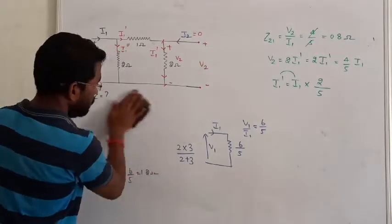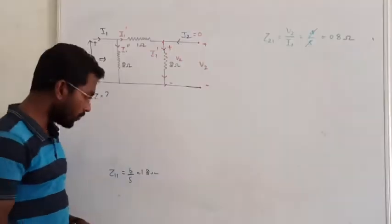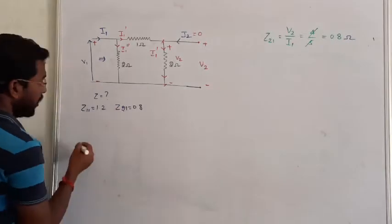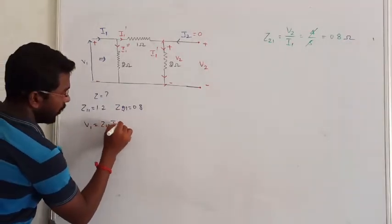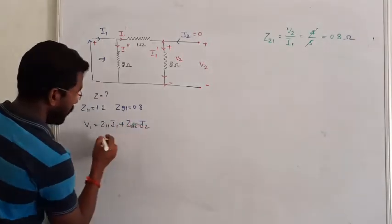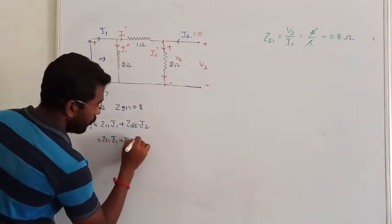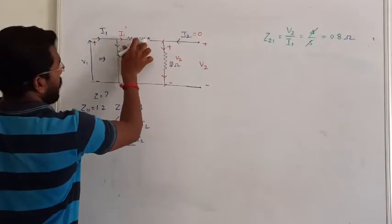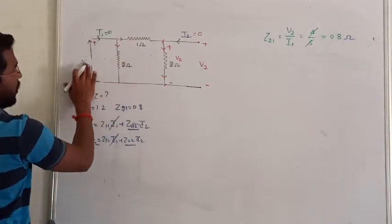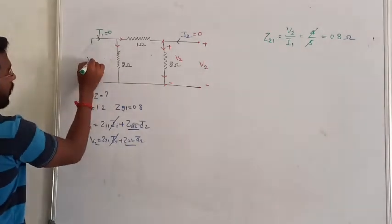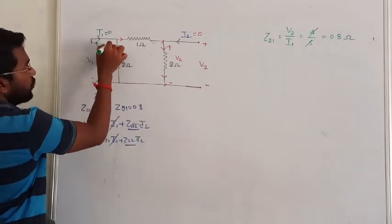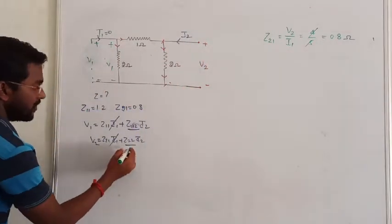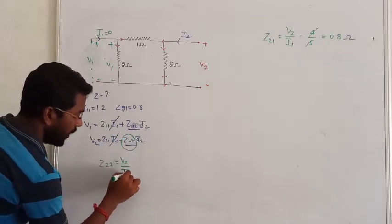We can calculate Z12 and Z22. We found Z11 as 1.2. Let me write V1 equal to Z11 I1 plus Z12 I2, and V2 equal to Z21 I1 plus Z22 I2. If I1 is 0, we open port 1. We measure voltage V1. Now we are supplying the output current I2. Let me calculate Z22 when I1 is 0, that's V2 by I2.